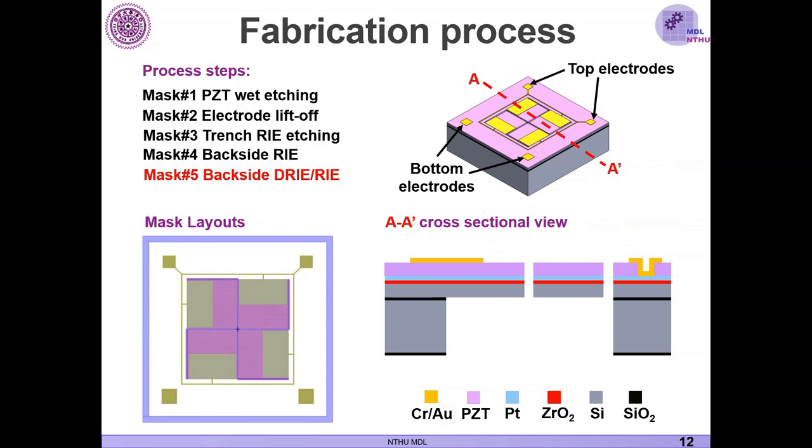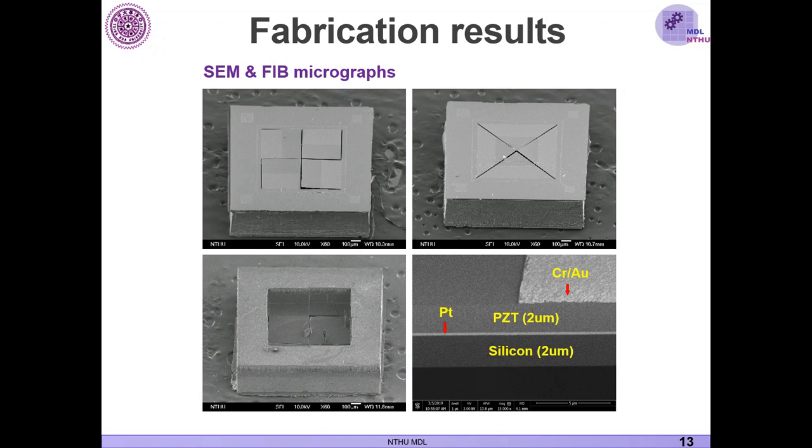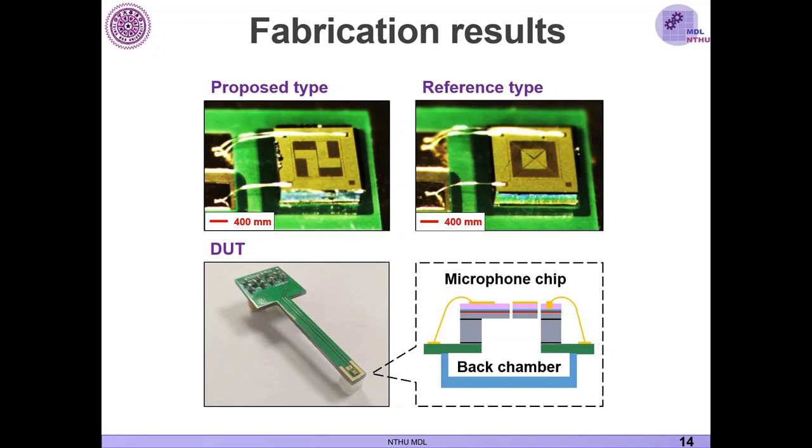So from the SEM micrograph, we can see that both of the proposed type and reference type is successfully fabricated. And from the backside view, we can see the high aspect ratio cavity is also successfully made. And from the FIB cross-sectional view of the candelabra, we can clearly observe the layer stacking as our expectation. There is two micrometer for PZT layer and two micrometer of the device layer. So the device is later wire bonded onto a PCB board with a hole inside. And then from the backside will be covered with a plastic cap to form the back chamber. And so now the device is ready for measurement.